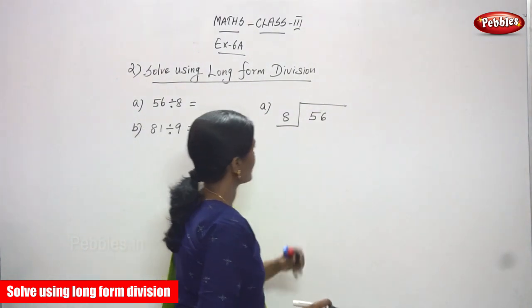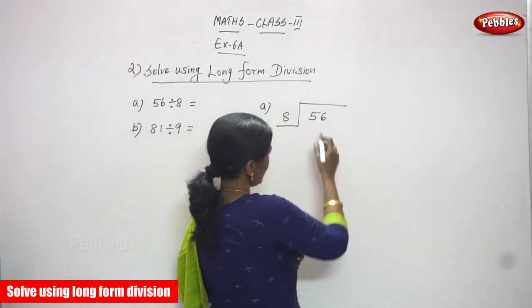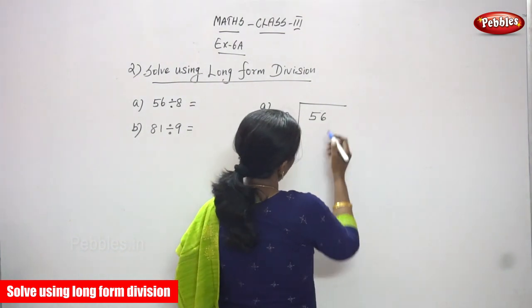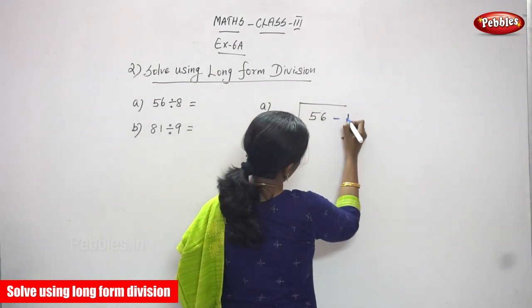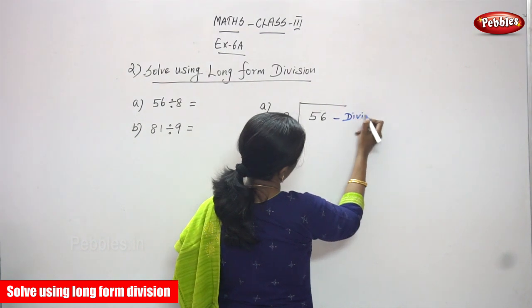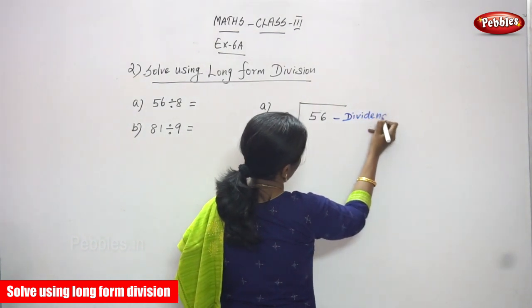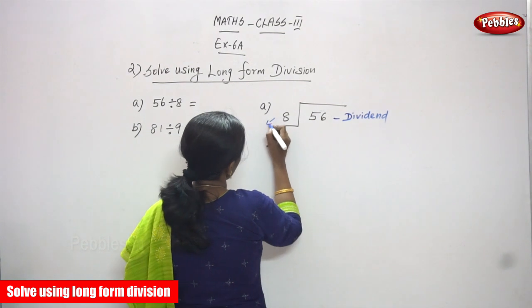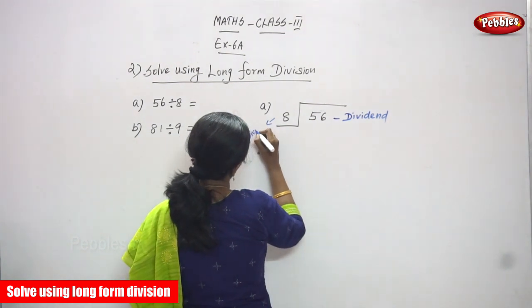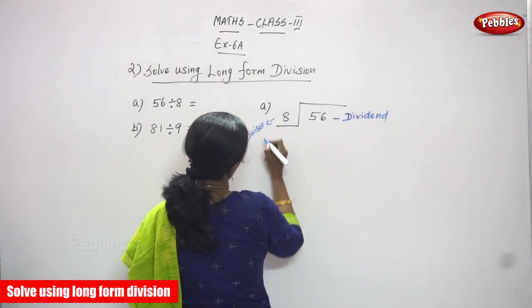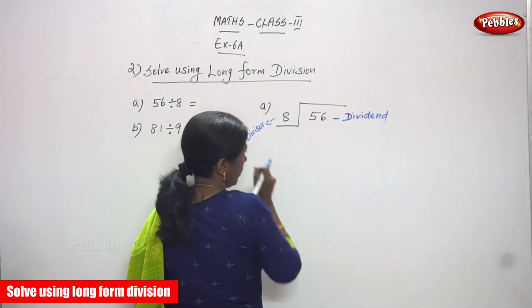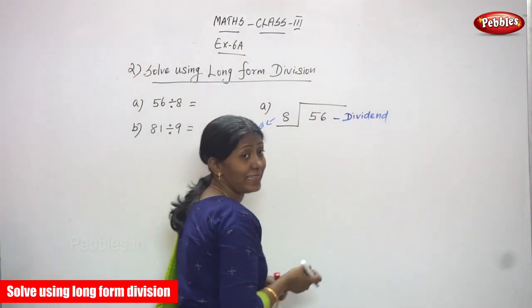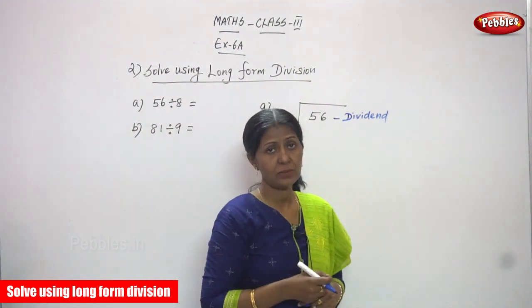Look at this number. 56 is going to be divided by 8. I will write the dividend. And this is the divisor. You must say the 8th table.